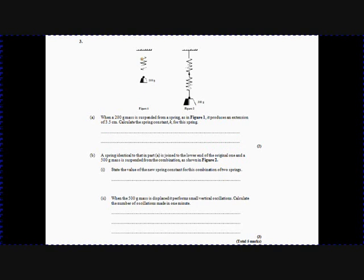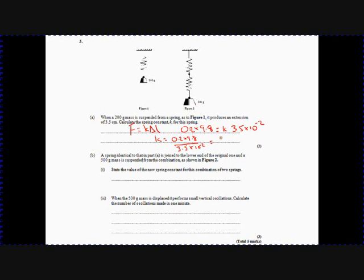Here's the first longer answer question. We've got a 200 gram mass suspended from a spring producing an extension of 3.5 centimetres. The first thing to remember is F = KΔL from unit 2. The force is 0.2 kilograms times 9.8 for gravity, equal to the spring constant times the change in length, which is 3.5 × 10⁻² metres. So K = (0.2 × 9.8) / (3.5 × 10⁻²), which comes to 56 newtons per metre.